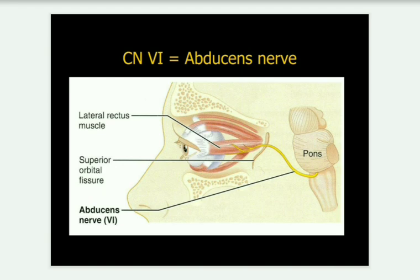Once again: the abducens nerve arises from the pons of the brain, then the subarachnoid space, then the cavernous sinus at the tip of the temporal bone. From there, it enters the orbit of the eye through the SOF — superior orbital fissure — and then supplies into the LR6, lateral rectus. The 6th cranial nerve is your abducens nerve.